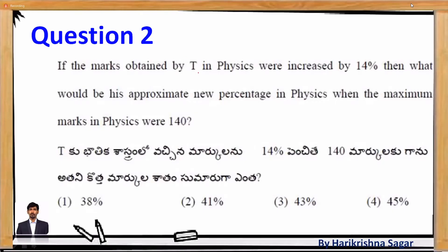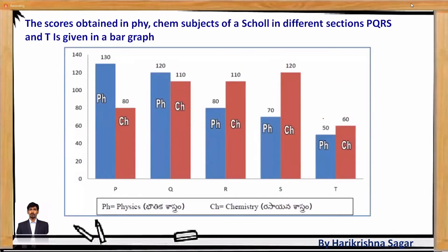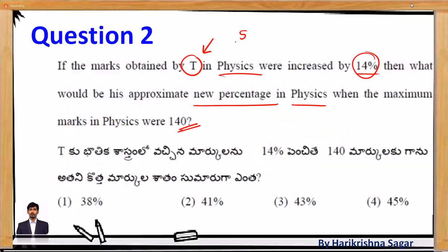The second question: if the marks obtained by T in physics is increased by 14%, what would be the approximate new percentage in physics when the maximum score is 140? First, T's score in physics is 50. Now calculate 14% of 50, which is 7. So the new score of T in physics is 50 + 7 = 57.